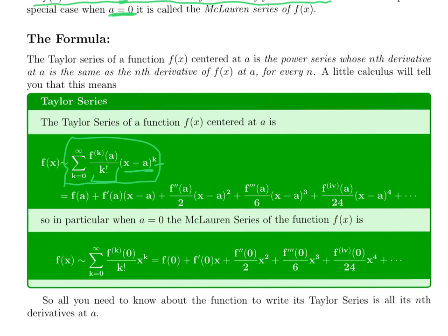A little easier to see what's going on if you look at the first few terms. The 0th term is f of a. The first term is just the derivative times x minus a, the derivative at a. The next term is the second derivative at a divided by 2 times x minus a squared. Then the third derivative divided by 6, the fourth derivative by 24, and so on. When a is 0 that gets simpler because instead of x minus a to the nth power, you have x to the nth power, instead of the derivative evaluated at a, it's evaluated at 0.